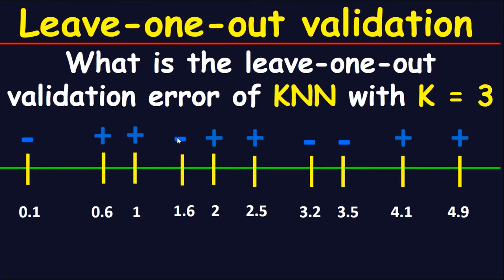Now look at the signs of these three points: positive sign, positive sign, negative sign. The majority of signs in these three points is positive, because we have two positive signs and only one negative sign. However, the original point we are looking at is negative, so this point is an error.